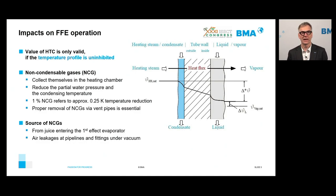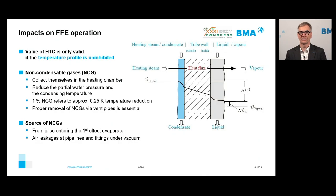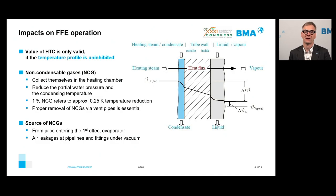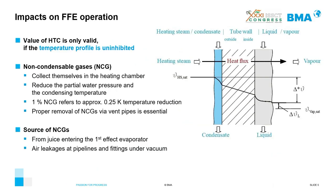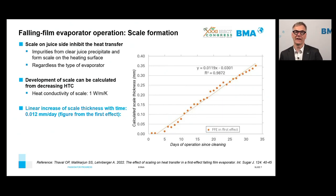Proper removal of non-condensable gases is done via the vent pipes of the Falling Film Evaporator. Care must be taken not to have too much non-condensable gas in the heating steam. Non-condensable gases dissolved in the juice cannot be influenced — they are released to the vapor during evaporation — but air leakages must be avoided, especially when running the system under vacuum. The second inhibitor of heat transfer is scale formation on the juice side.